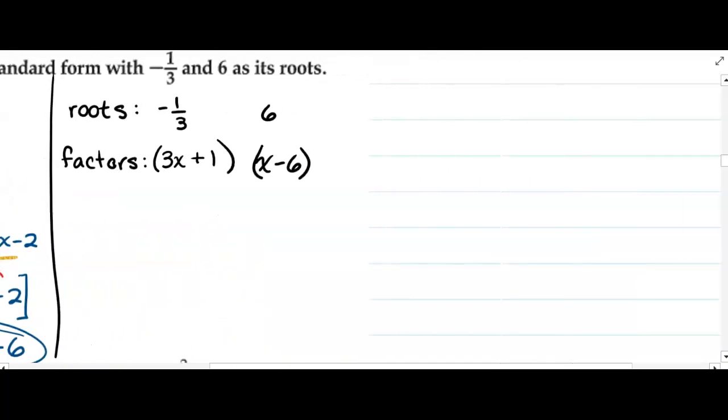And if you're not sure you believe that, try it off to the side: 3x + 1 equals 0, we would subtract 1...